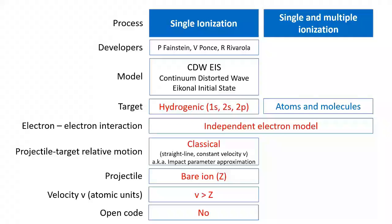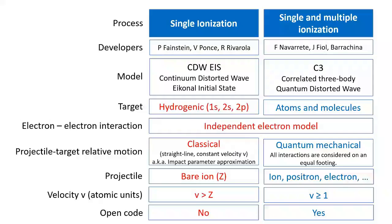For example, the computer program can now deal with multiple ionization processes of atomic and molecular targets, while still maintaining the independent electron model. In our lab, alongside this code, we have also been developing another related theory, which we call C3, or correlated three-body quantum distorted wave. The main difference is that we remove the constraint imposed by the impact parameter approximation and consider all interactions quantum mechanically and on equal footing, so the model can be used for any type of projectile — not limited to ions.